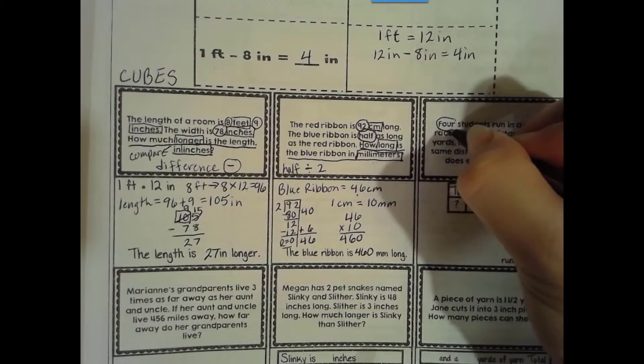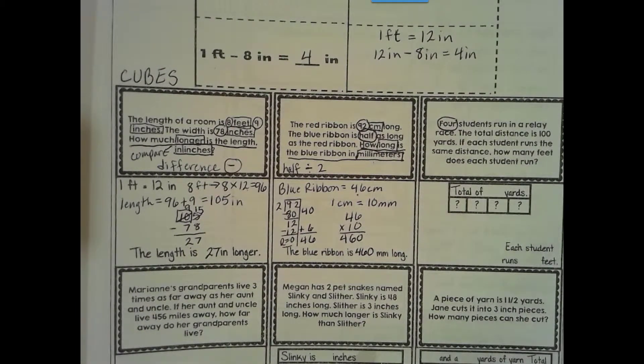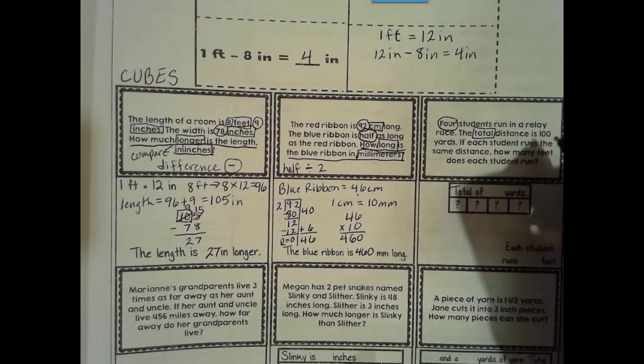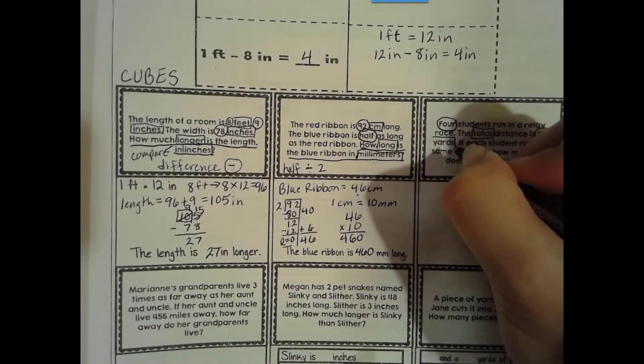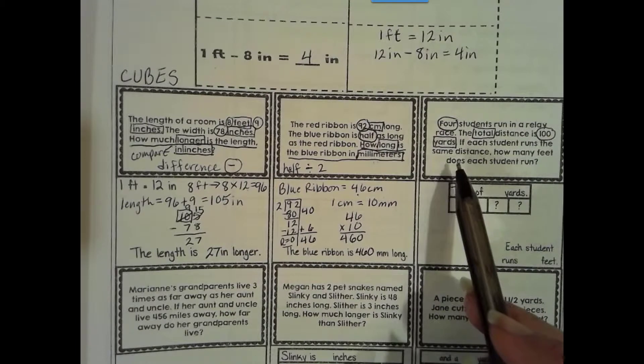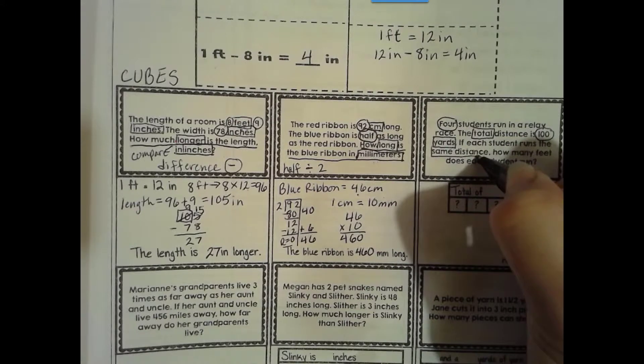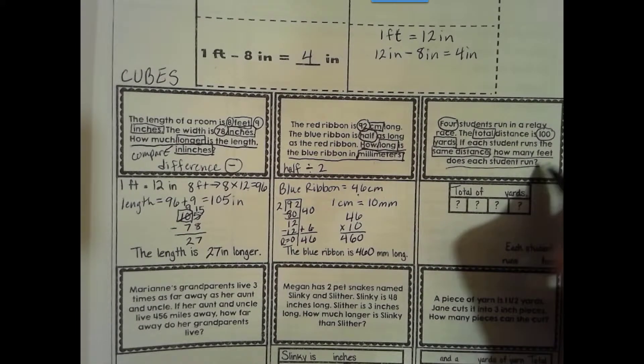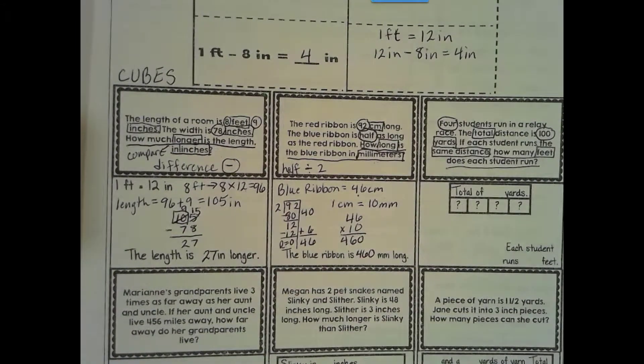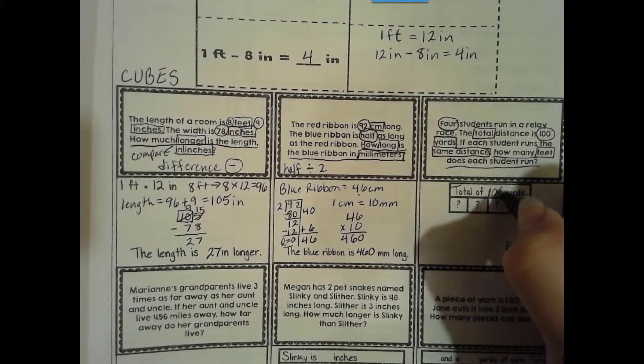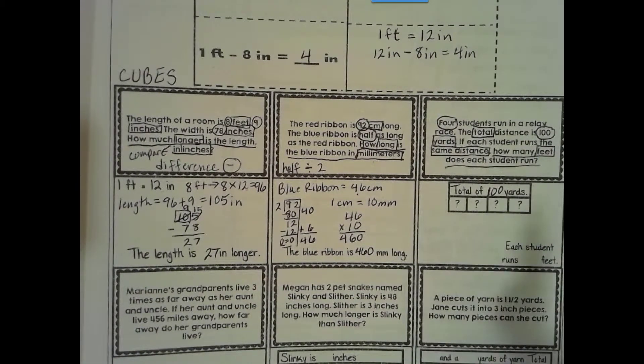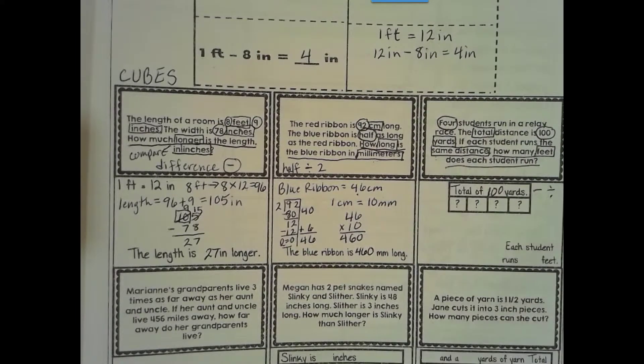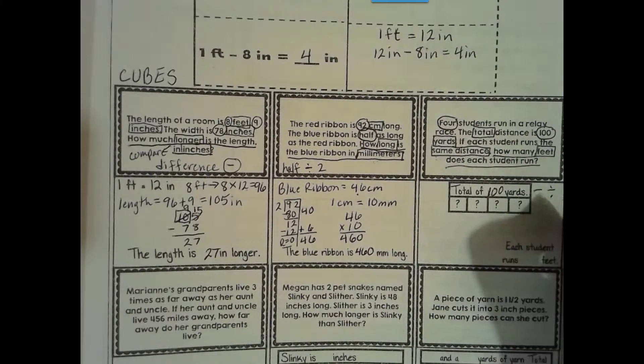Okay, next problem. Four students run a relay race. If each student runs the same distance, how many feet does each student run? So we want our answer in feet. So we know, we do know the total. It's 100 yards. And we have four students each running it. So when we know the total, we're either going to subtract or divide. Well, this says that they do the same distance. So we're going to break this up into equal groups. So that means we're going to divide.